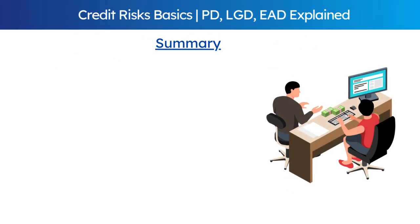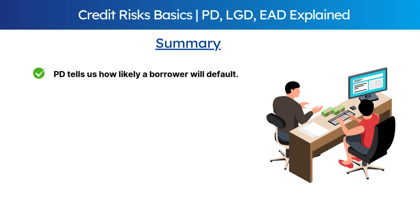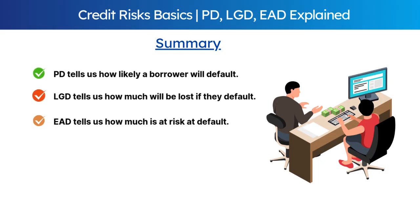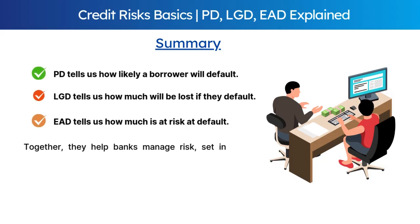To summarize: PD tells us how likely a borrower is to default, LGD tells us how much will be lost if they default, and EAD tells us how much is at risk at the time of default. Together, they help banks manage risk, set interest rates, and comply with regulatory requirements like Basel laws.